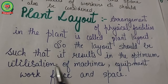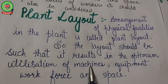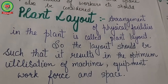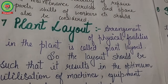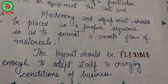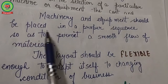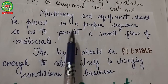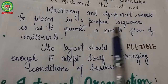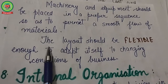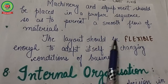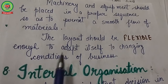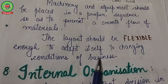The plant layout should result in optimum utilization of machines, equipment, workforce, and space. Machinery and equipment should be placed in a proper sequence to permit a smooth flow of materials. The layout should also be flexible so as to adapt itself to the changing conditions of the business.